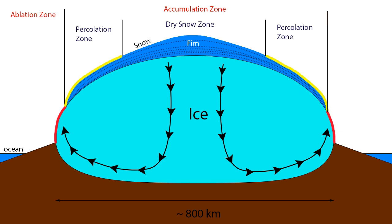Near the center of the accumulation zone where elevations reach well over 10,000 feet, snow remains cold and dry throughout the year. This area is called the dry snow zone, and experiences very little to no melt at all during the summer months. Along the outer edges of the accumulation zone where elevations are lower and relatively warm ocean waters are closer, the firn layer experiences high melt during the summer. This is called the percolation zone.